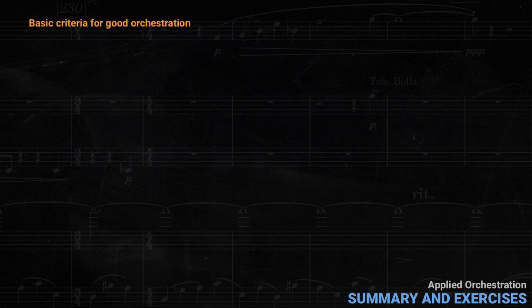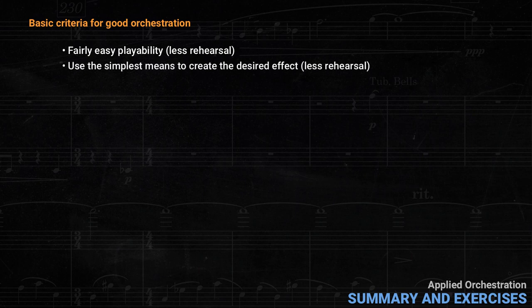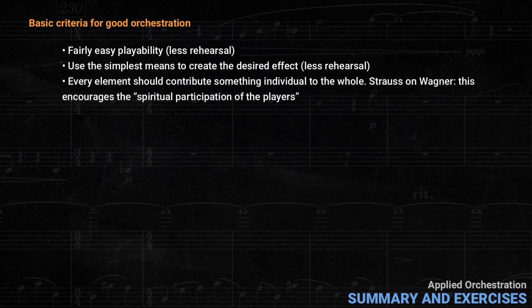Here are the basic criteria for good orchestration. Make the music as easy as possible to play, because you don't want to waste rehearsal time. Use the simplest means available to create the desired effect, again just to save rehearsal time. Every element in the ensemble should contribute something individual to the whole. Obviously the second flute in a tutti won't be contributing as much as the trumpet, but it should nonetheless have something at least moderately interesting. Richard Strauss said about Wagner that this encourages the spiritual participation of the players.